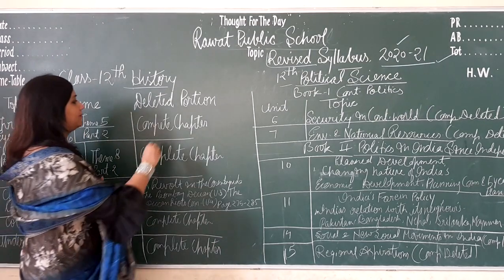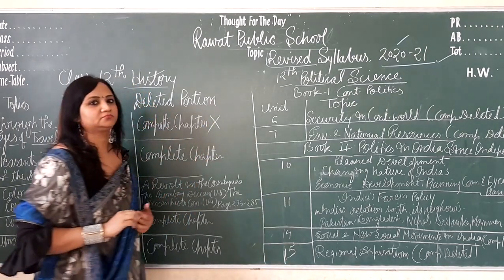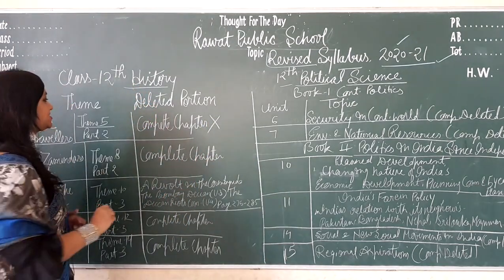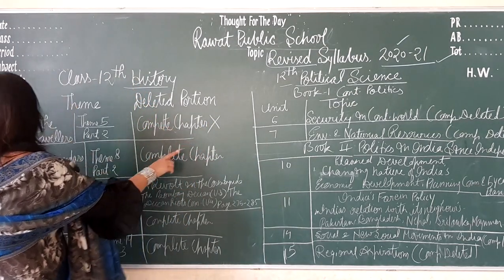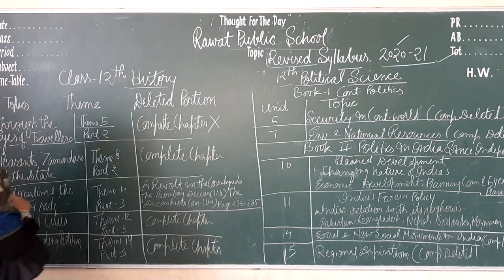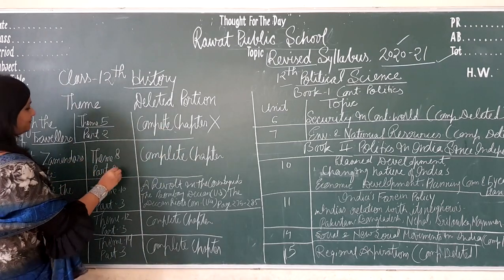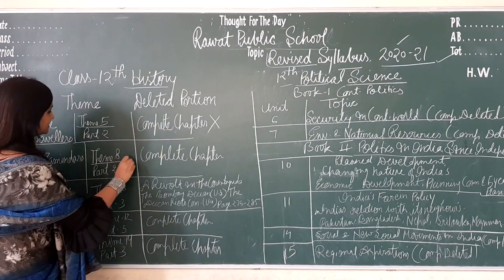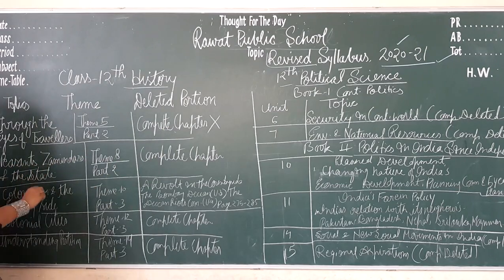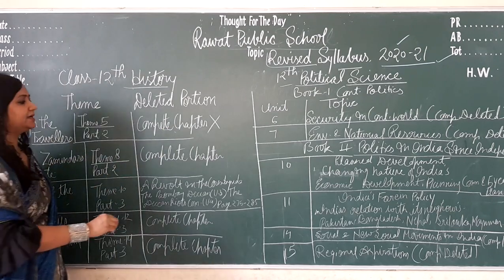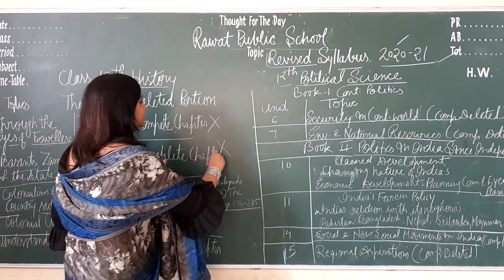This chapter is completely deleted. Then Book 2, which is Part 2, Theme A — Peasants, Zamindars and Estates — this is completely deleted.